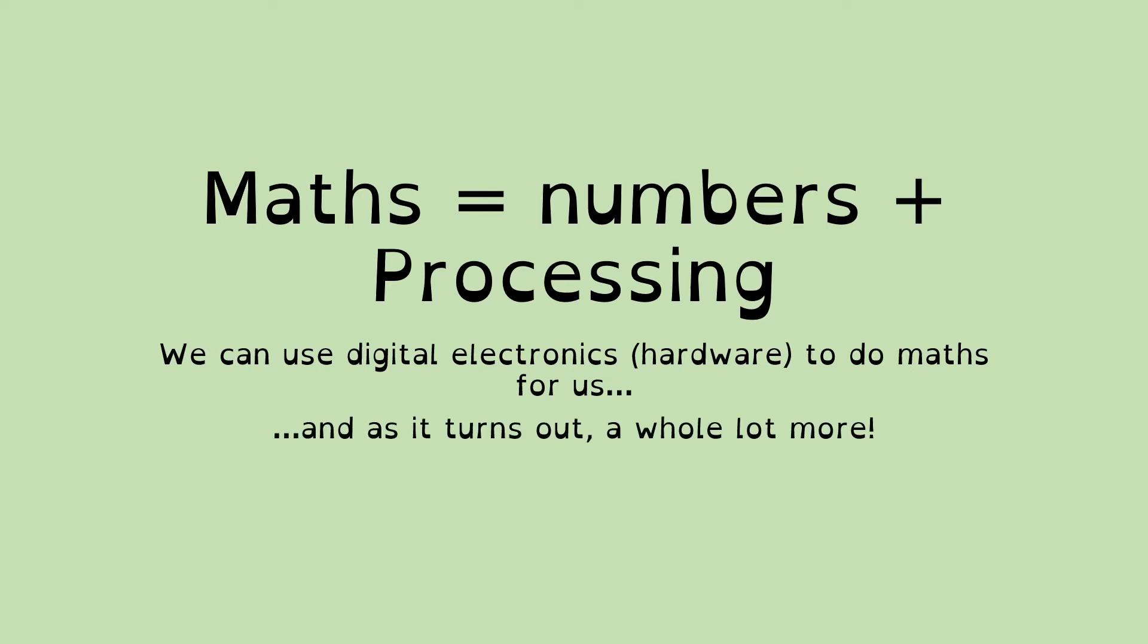So it turns out that because we can do numbers and processing, we can actually use it for a whole load more. And you'll have seen computers using images, computers using sound. And that's done by breaking down the images and the sound into binary numbers, which can then be processed by the digital electronics. So maths equals computer. In fact, the word compute obviously means to calculate something in maths. And computers are made from these digital circuits. And this here right now is the very start of your understanding of how computers work in a physical hardware sense.